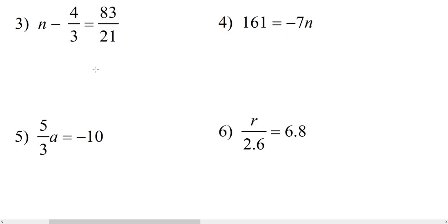For number three, we have n minus 4 thirds equals 83 over 21. To isolate n, we need to get rid of this negative 4 thirds, so we're going to add 4 thirds to both sides.